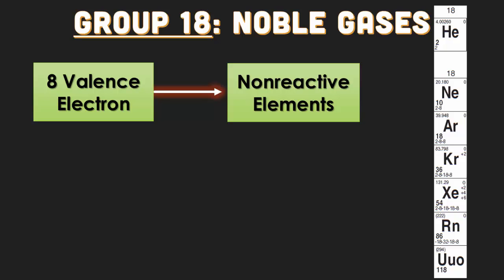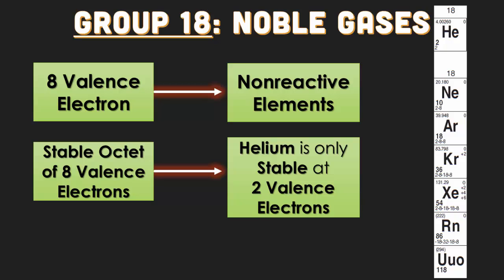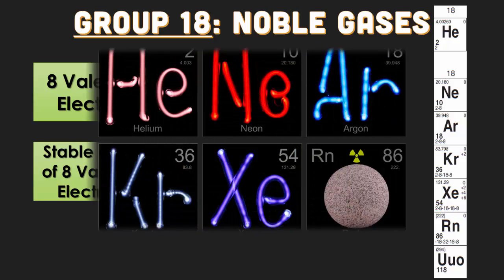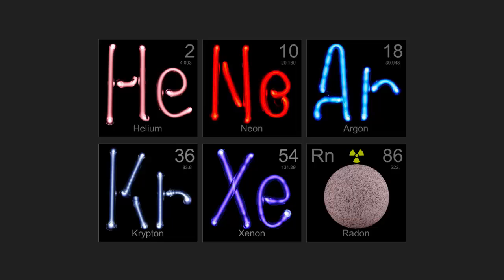Group 18 is going to be our noble gases. Everything in group 18, with the exception of helium, has eight valence electrons. But every element in group 18 is a non-reactive element — they all have a stable octet of eight valence electrons. However, helium is the only one that is stable with two valence electrons — you need to know that. It's very hard to see gases because they're all colorless, but if you were to excite them using excited-to-ground states, you can get different energy colors. Helium is a pinkish color. Neon is red. Argon, krypton, and xenon are different shades of blue. Radon, though a gas, is commonly found in a compound and is a very radioactive substance. Noble gases are non-reactive because they have a stable electron configuration.